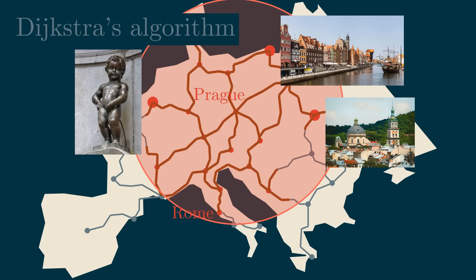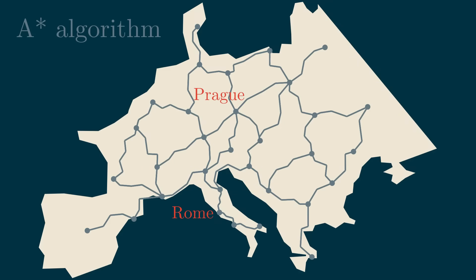This suggests we can improve upon Dijkstra's algorithm, and this is exactly what the A-star algorithm does. A-star is a variant of Dijkstra's algorithm that can incorporate additional information about our graph. In the case of a map, it can search like this. You can see how the algorithm only needs to explore a much smaller portion of the network before discovering Rome, which is also why real map applications are based on A-star and not Dijkstra.